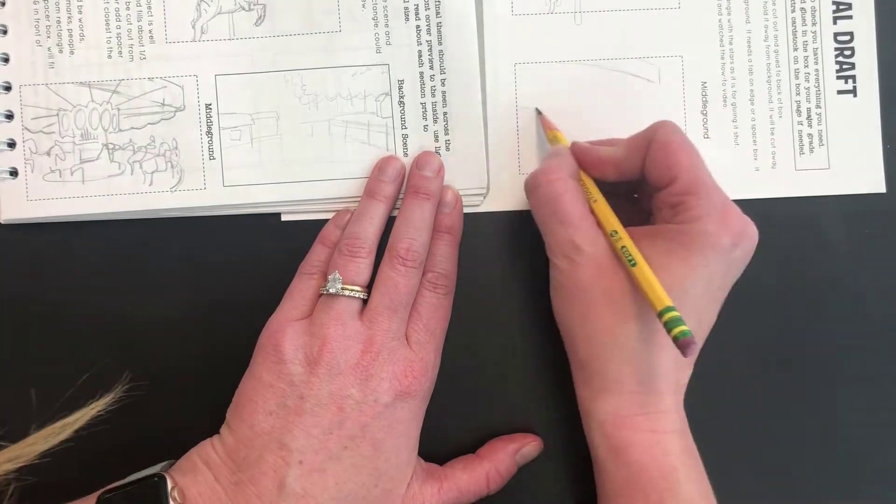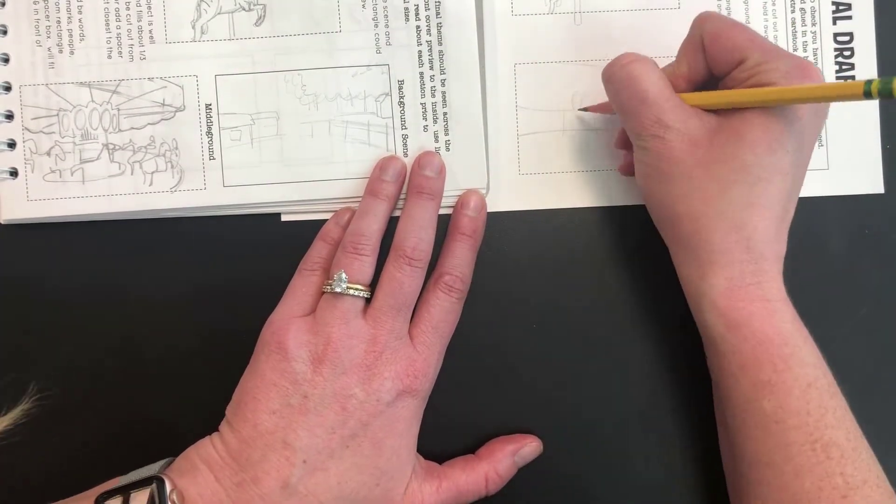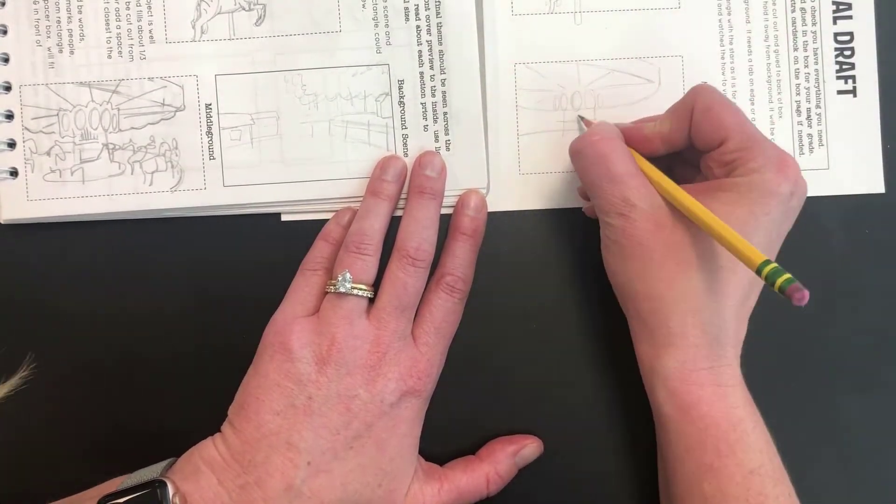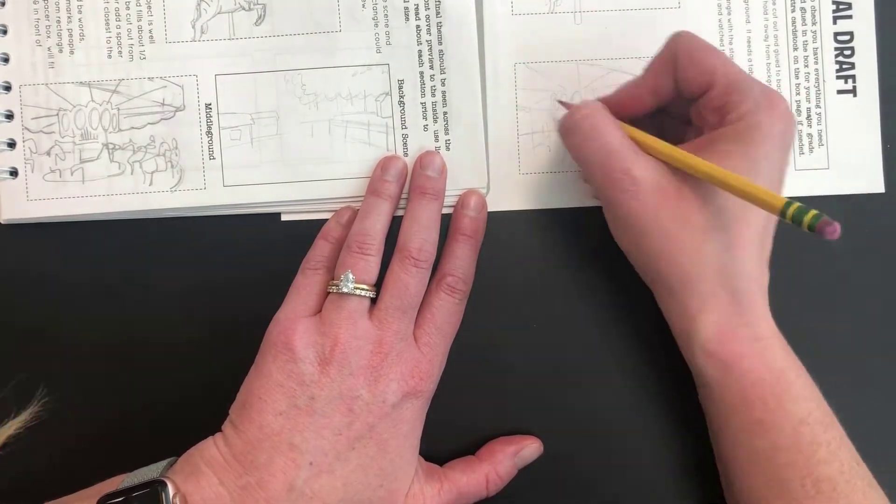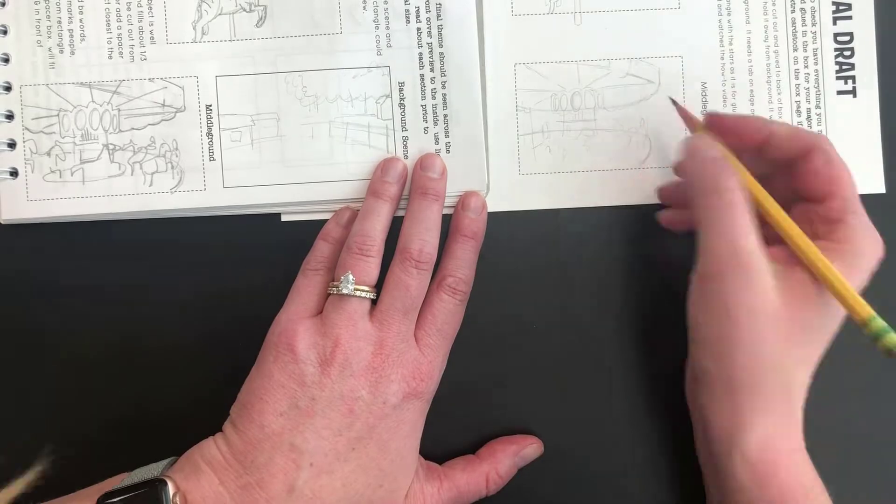For the middle ground, it could be words, natural objects, landmarks, people, or anything. It's going to be cut out from the rectangle and have tabs or a spacer box. It is going to fit behind the foreground and in front of the background.